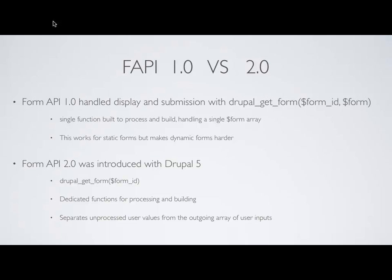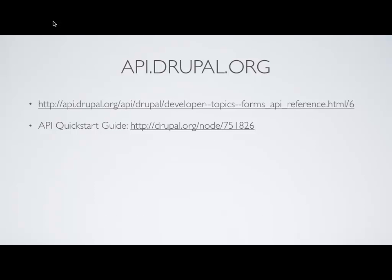The biggest thing about the two versions: Form API 1.0 basically handled the display and submission of the form with just one function, and it wasn't very easy to build multi-step forms. With the advent of Form API 2.0 in Drupal 5, we got a few more functions dedicated to processing, validating, submitting, and displaying the form. We're going to look at that loop — this is your biggest tool in the bag.